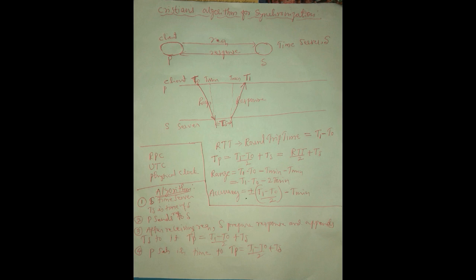The second step: P is the client which sends the request to the server S at starting time t0. The third step: after receiving the request from the client, the server S prepares the response and appends its server time ts to it.